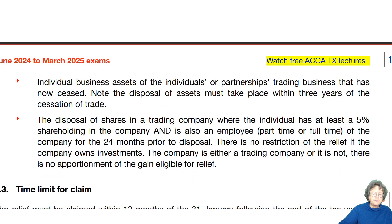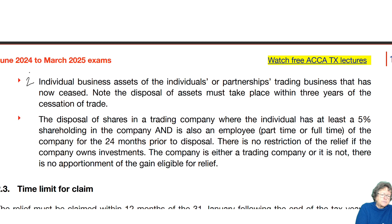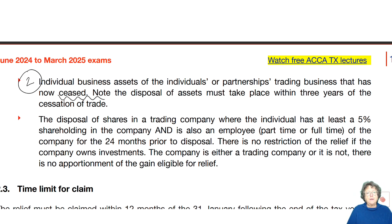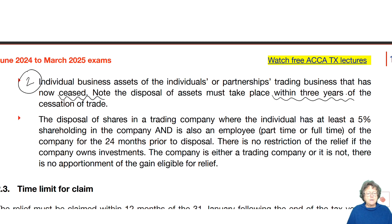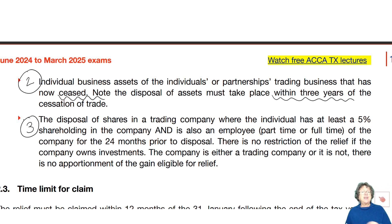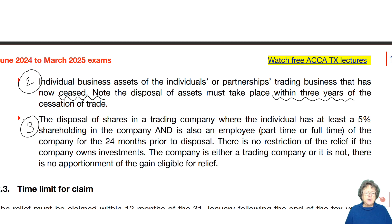The second situation: individual business assets are available if you have ceased to trade. If you cease to trade, you do get BADR on all the assets as long as disposal takes place within three years of the date of cessation. That doesn't come up quite as much. The first scenario — whole or part of business — comes up most, the shares situation second, and ceasing to trade third, as there are many other conditions required.